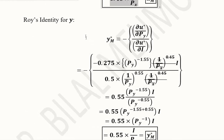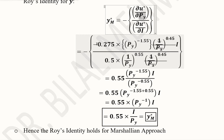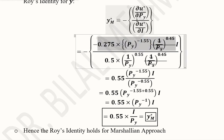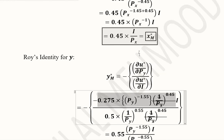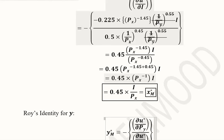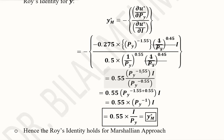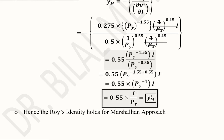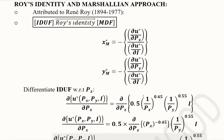The same procedure is applied for good y using the formula with Py. The new value is substituted into the numerator, while the denominator retains the same derivative with respect to I. After simplifying and rearranging into the most suitable form, we obtain the Marshallian demand function for good y. This proves that Roy's Identity is applicable to the Marshallian approach and helps us recover the Marshallian demand functions when the indirect utility function is given. Thank you.